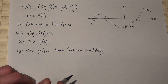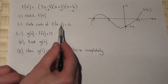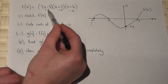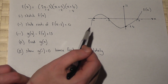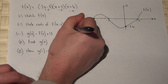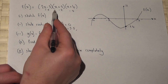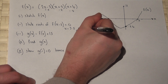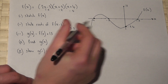Part 2 asks us to state the roots of f of bracket x minus 2. The x minus 2 will translate the graph to the right by 2. So these were the original roots, and the new roots are these values plus 2 — it's always the opposite to what's in the bracket. So the roots are at x equals 3.5, x equals 0, and x equals minus 2.